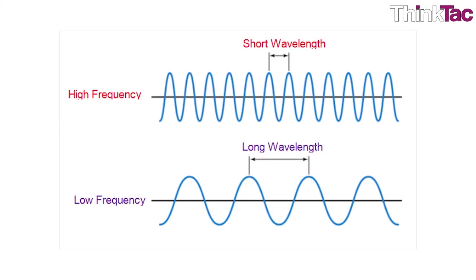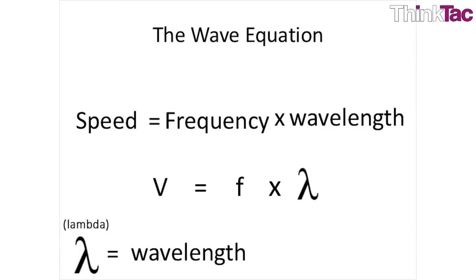Frequency and wavelength happen to be inversely proportional and can be related by the formula V equals F lambda, where V is the speed of the wave, F is the frequency of the wave, and lambda is the wavelength of the wave.